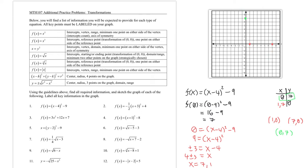The professor also wants the vertex, which is very easily found when the function is in vertex form. The vertex is literally just based off the numbers in the expression — in this case, the vertex is (4, -9). We can go ahead and plot that as well at 4 comma negative 9, which is down here.